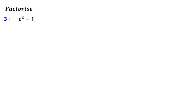Third question: c squared minus 1. I can write 1 as 1 squared, so this is c squared minus 1 squared. Its factorization will be (c - 1) into (c + 1). I can also write this as (c + 1) into (c - 1).